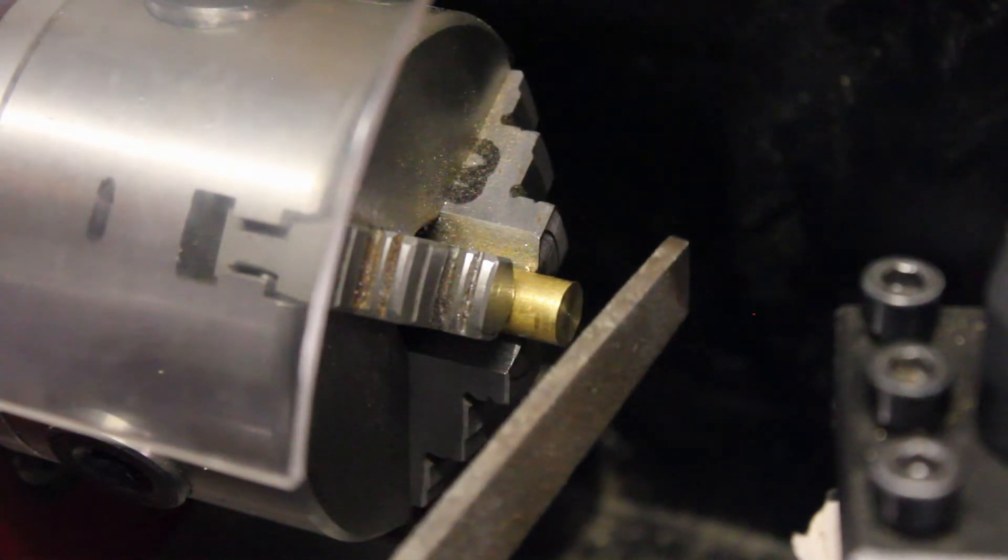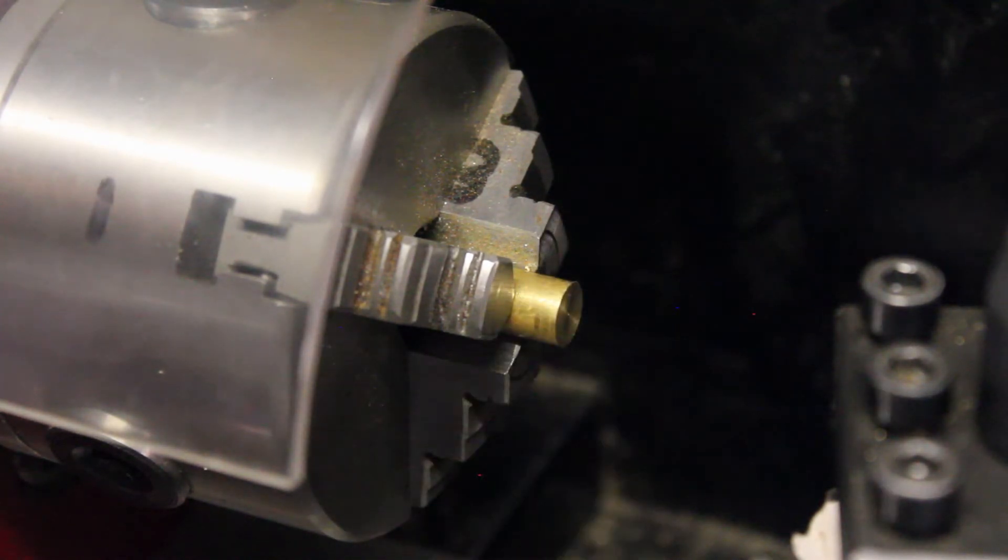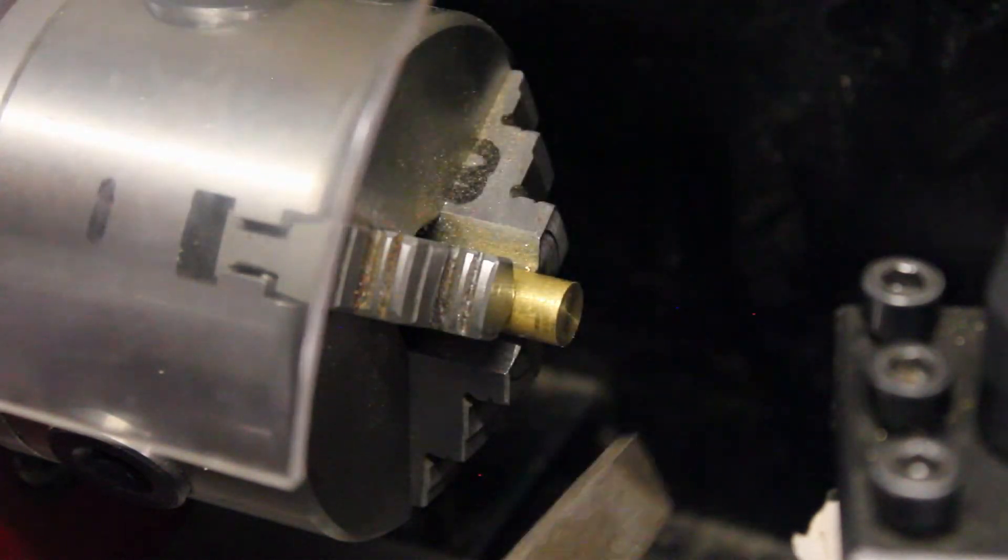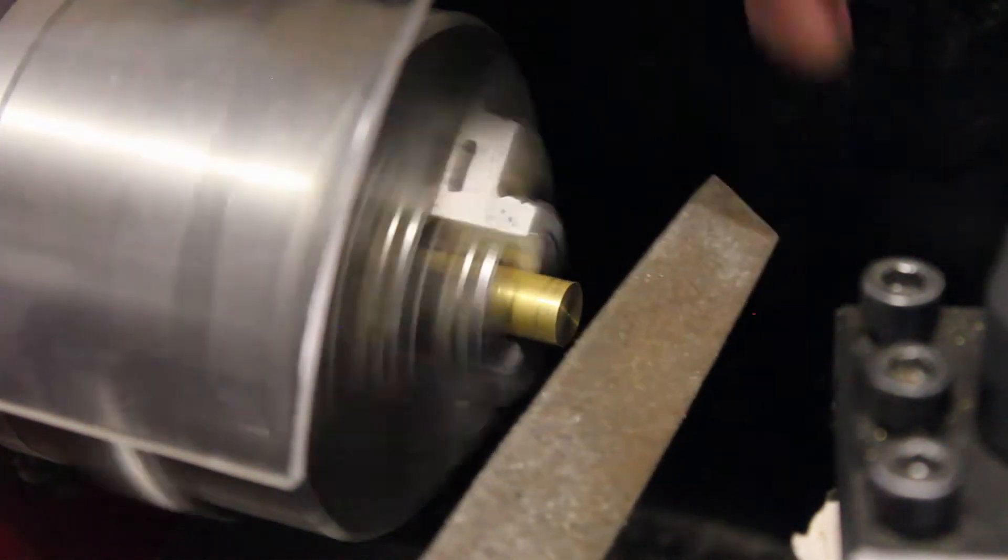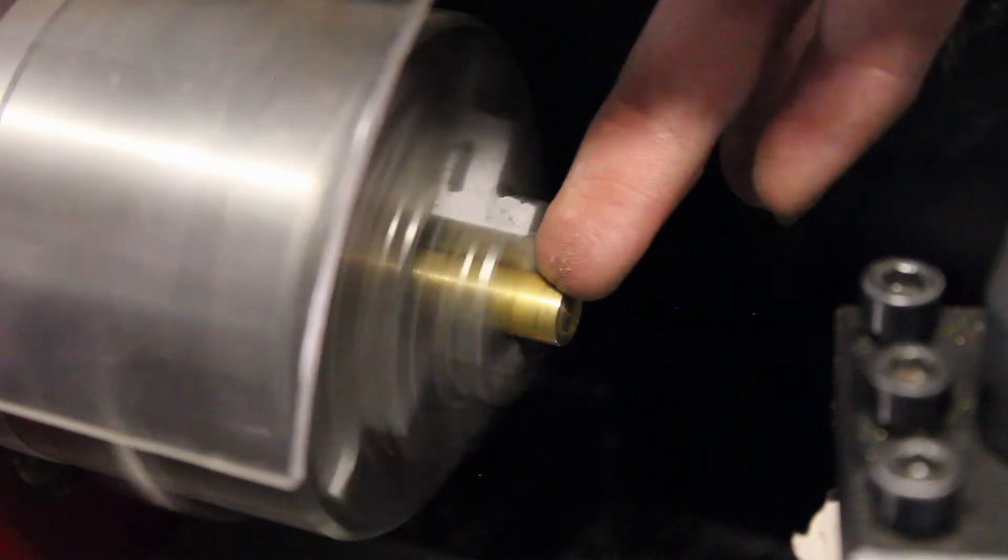If you turn it on, it doesn't have to be real fast. You can either let it go around and make a radius or just do a chamfer on this edge here to get rid of the burr. And now I can't feel anything sharp.